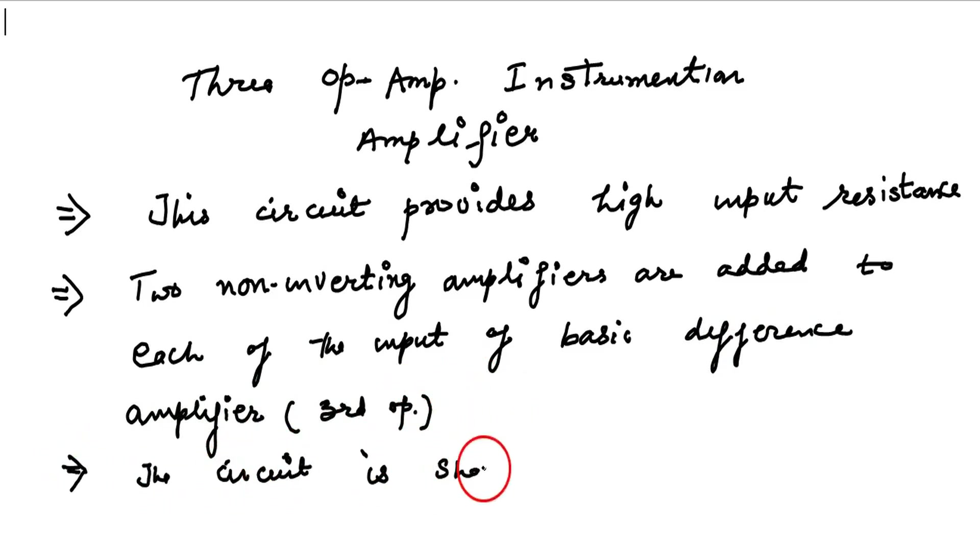Now the figure or the circuit is shown. This is one op, A1, plus minus, plus means non-inverting, minus means inverting. A2 is minus plus. A3 again minus plus, inverting and non-inverting.